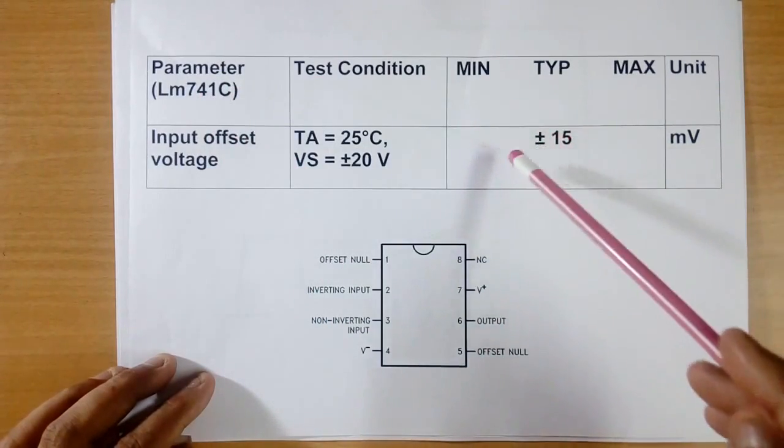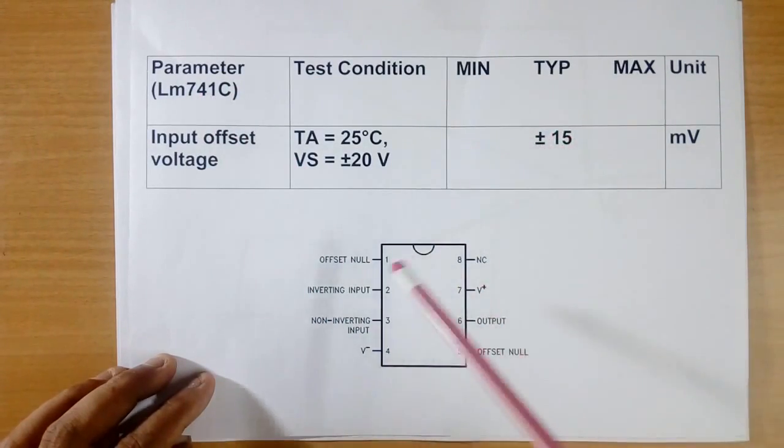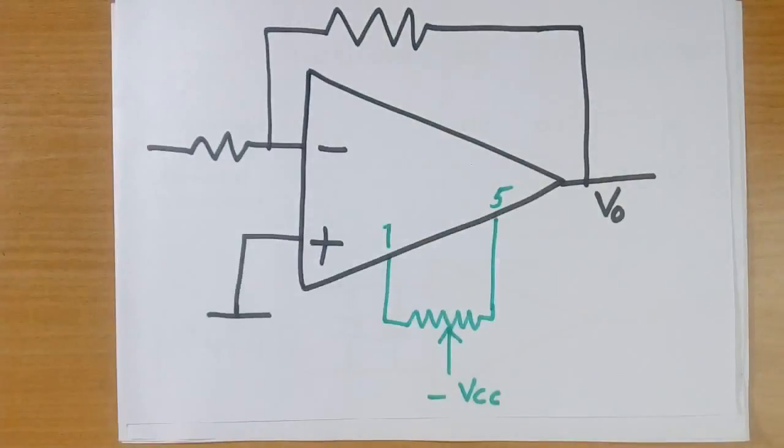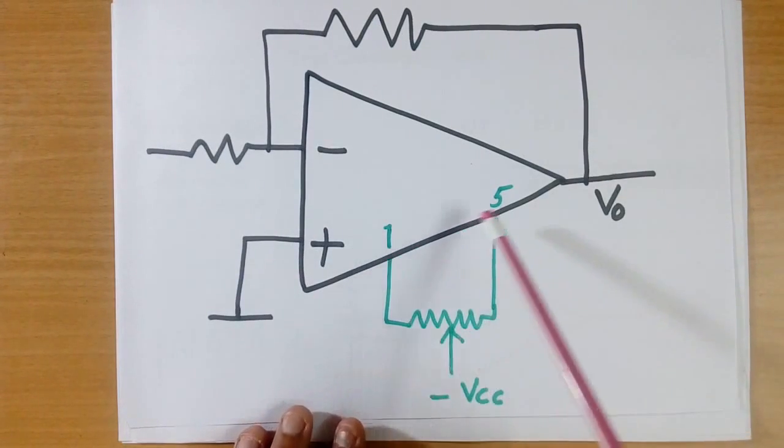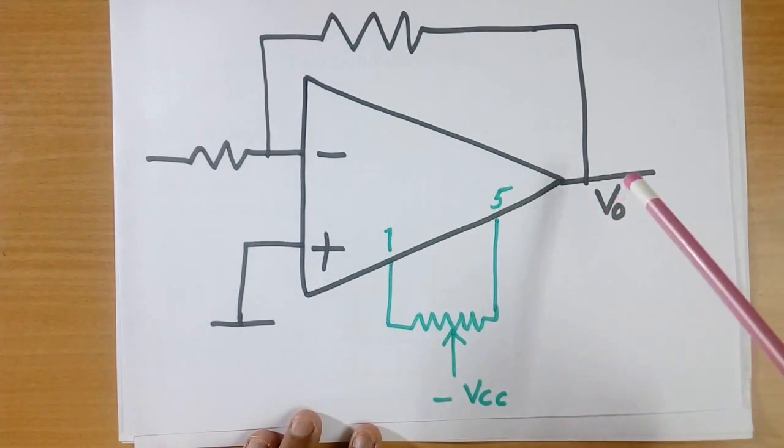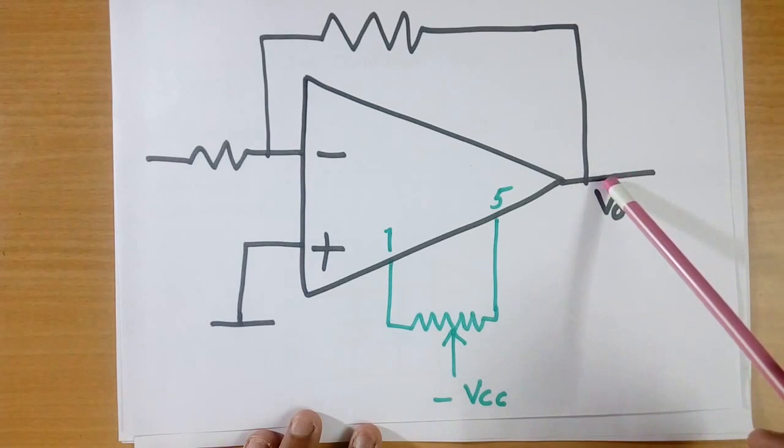To remove this, to make it 0, there are 2 pins, offset null, pin number 1 and 5. What we do, across pin number 1 and 5 we connect a potentiometer, and in middle pin we give minus supply, and we vary this. We give 0 volt here and here both, and we vary here until output becomes 0.